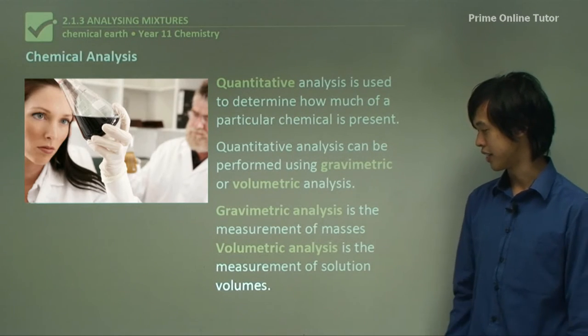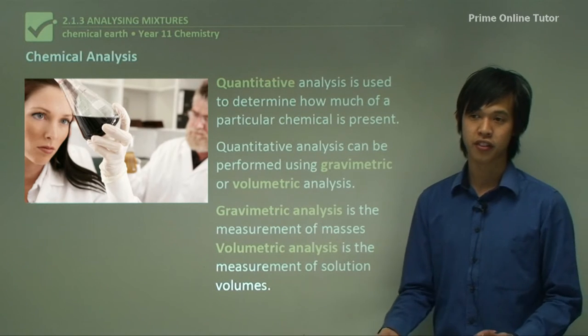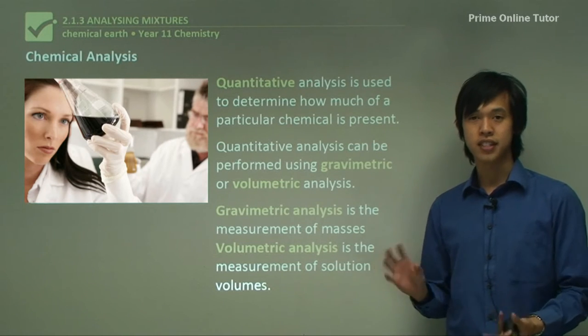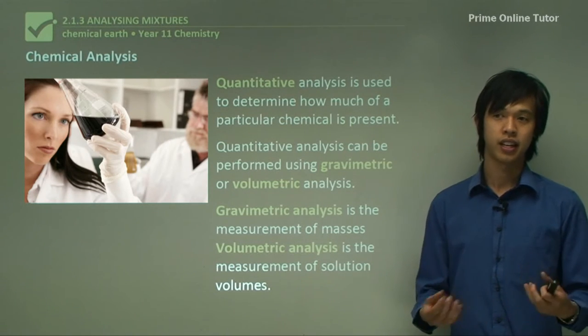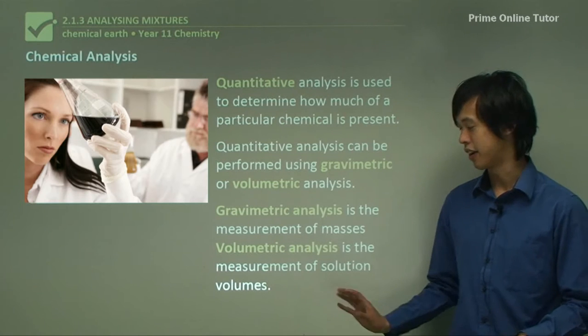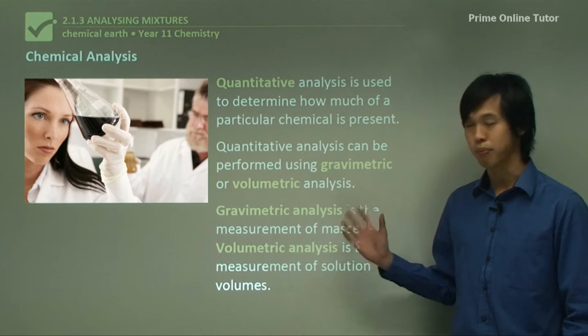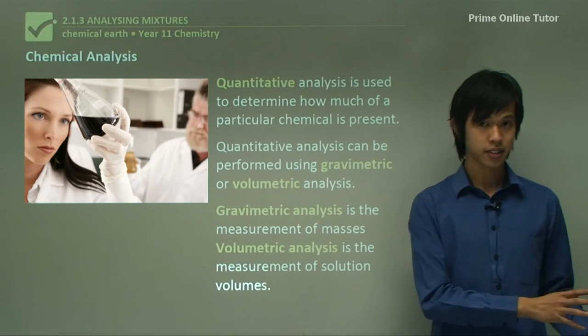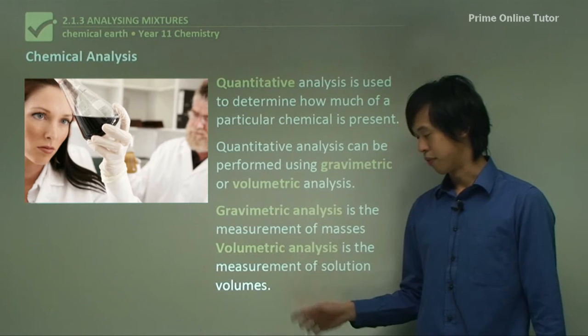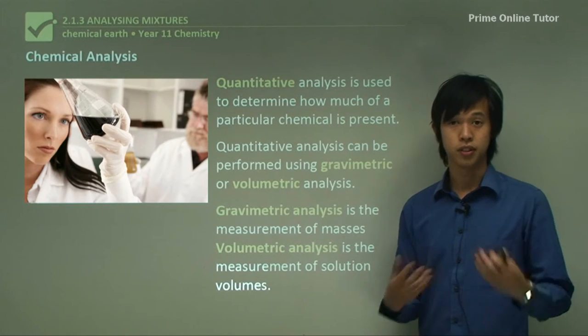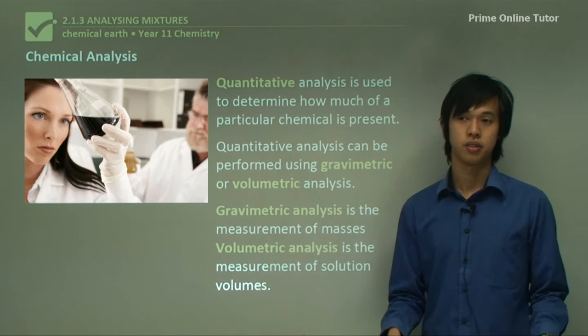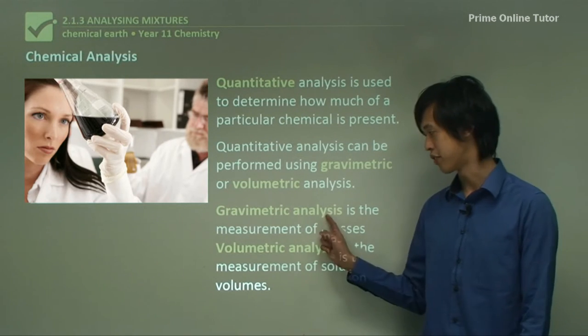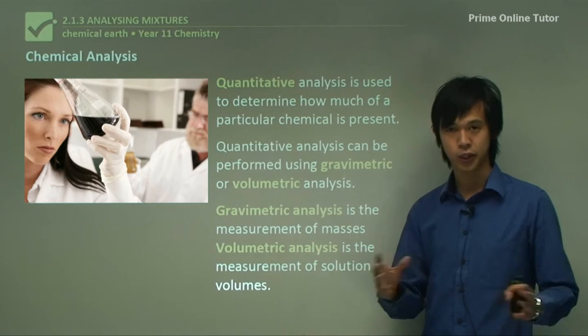Whereas volumetric analysis is the measure of solution volumes. So for instance if I had an acid and I mixed it with a base and I knew what the volumes of acids and bases were, then I got something out, that would be a volumetric analysis. And you can have mixtures of the two where you use a volumetric analysis to work out a mass, but volumetric analysis is simply looking at volumes of solutions. So salt waters or any sort of solution that you can think of. So that's the major difference, gravimetric mass, volumetric volume.